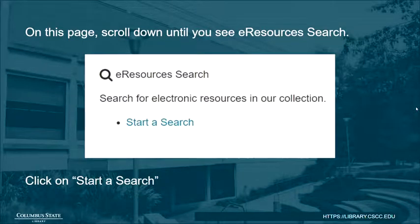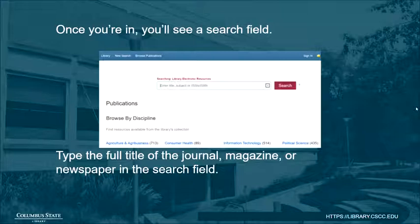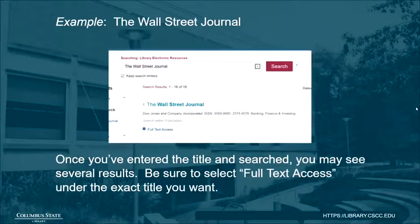Click on Start a Search. You'll see a dialog box. Enter your last name and your Cougar ID number. Once you're in, you'll see a search field. Type the full title of the journal, magazine, or newspaper in the search field. For example, the Wall Street Journal.